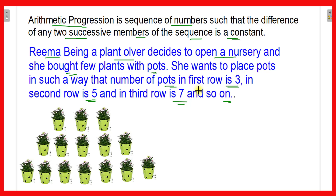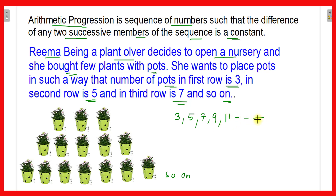So Rima places 3 pots in the first row, 5 pots in the second row, and 7 pots in the third row. Following this pattern, the next rows will have 9, 11 pots, and so on. Therefore, the arithmetic progression is 3, 5, 7, 9, 11, and so on. Now we will see the questions asked based on this given information.